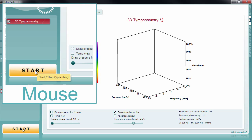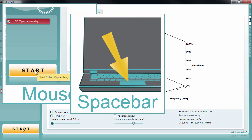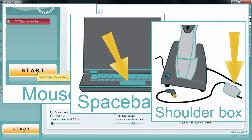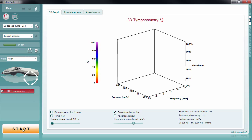Start the measurement by pressing the start button in the software, the space bar, or the shoulder box button. The probe then produces a wideband click at a rate of 21.5 Hz.